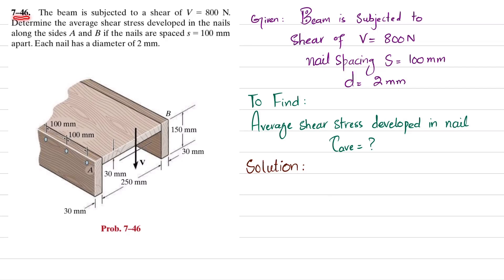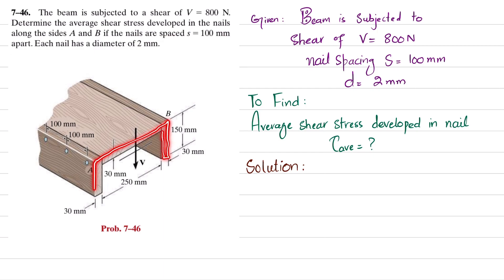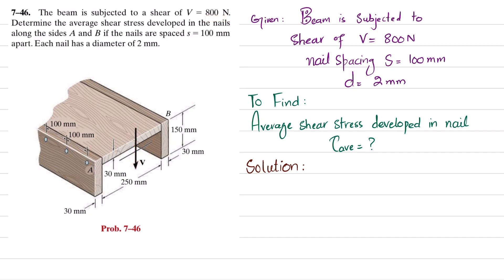Welcome back. Problem 7-46: the beam is subjected to a shear of 800 newtons. Determine the average shear stress developed in the nail at sides A and B if the nails are spaced 100 millimeters apart. Each nail has a diameter of 2 millimeters. You can see the beam is made of wood pieces nailed together at sides A and B, with a shear of 800 newtons applied.